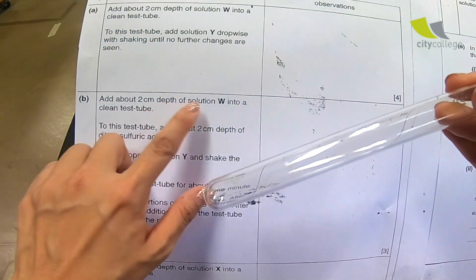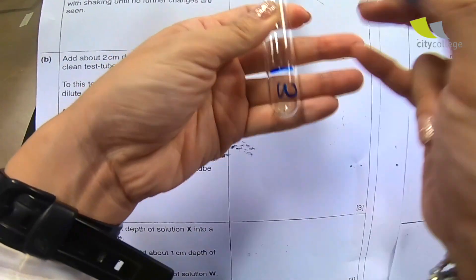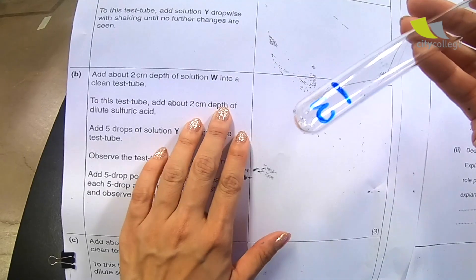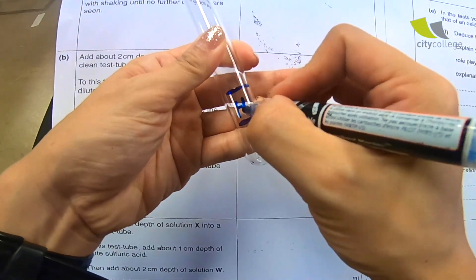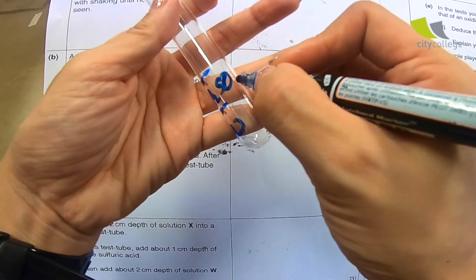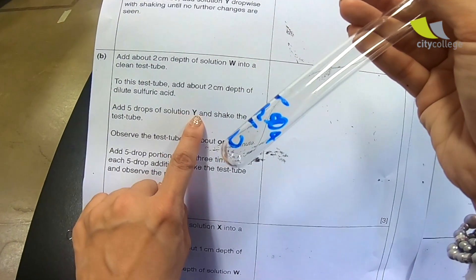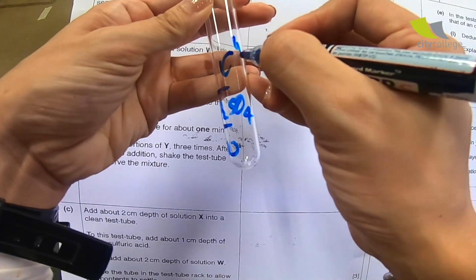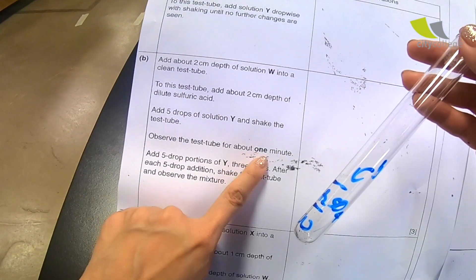Second part. Add about 2 cm depth of solution W, 2 cm W, into a clean test tube. To this test tube, add about 2 cm depth of dilute sulfuric acid. Another 2 cm. And I write down here, sulfuric acid. Now add 5 drops of solution Y and shake the test tube. Over here, I should add Y. Shake the test tube.